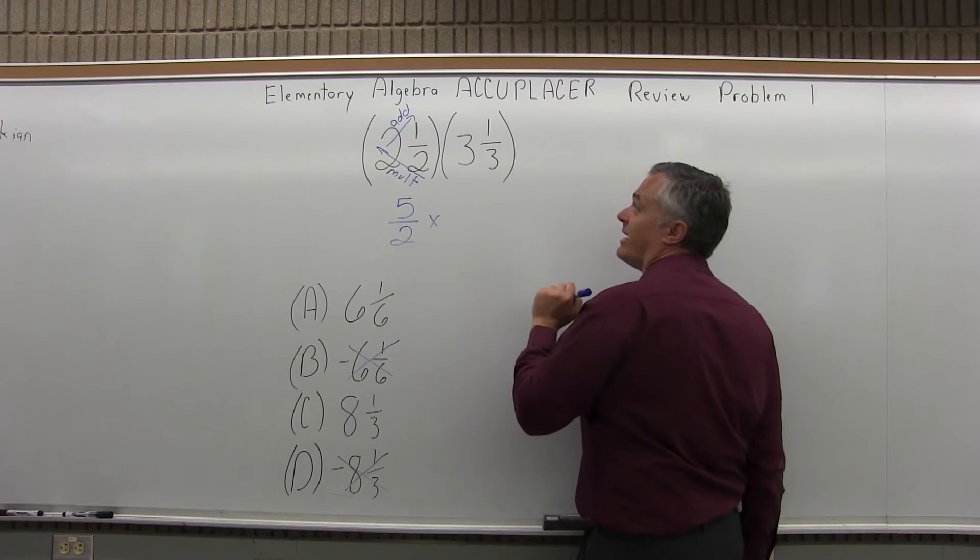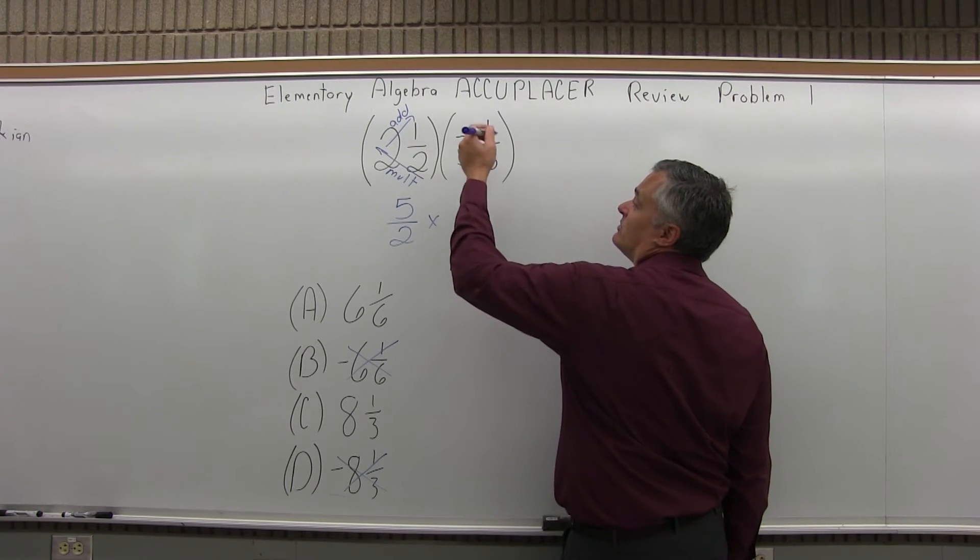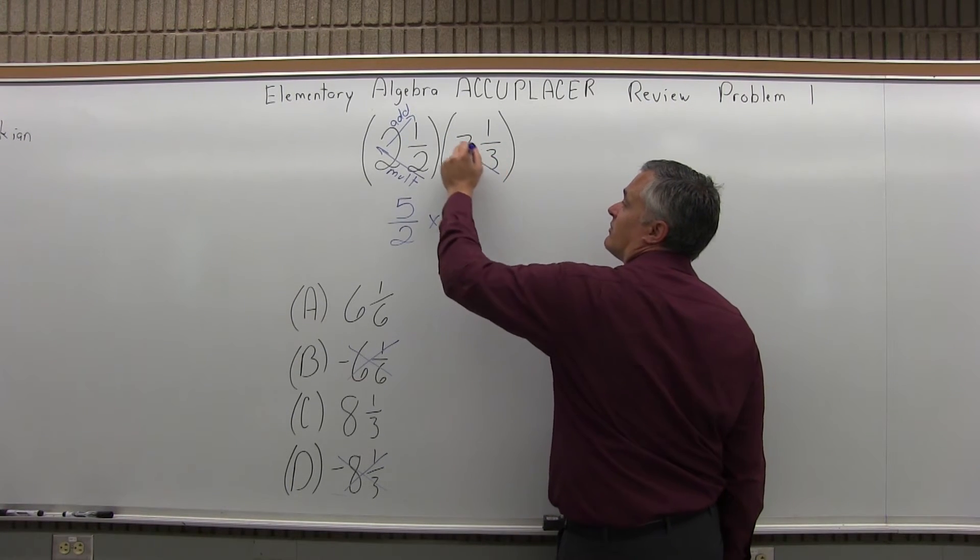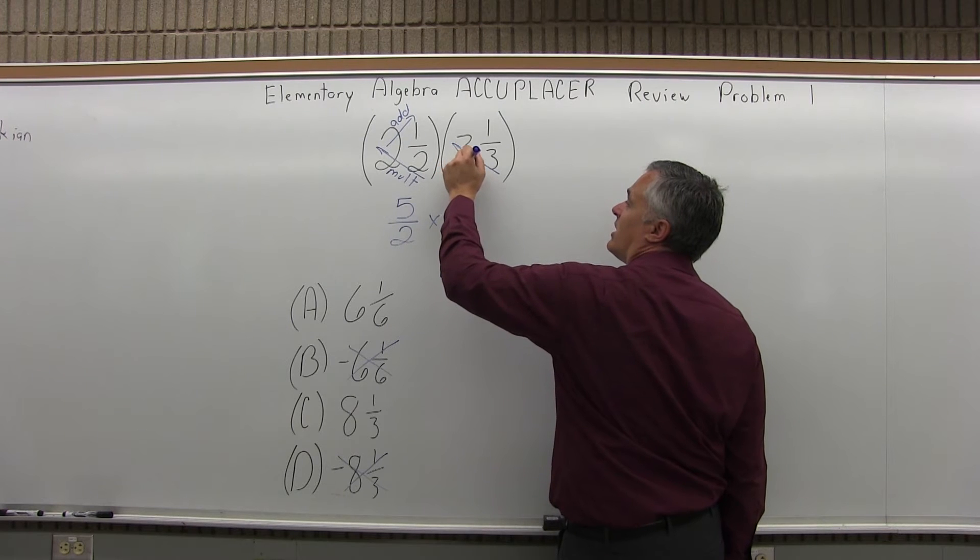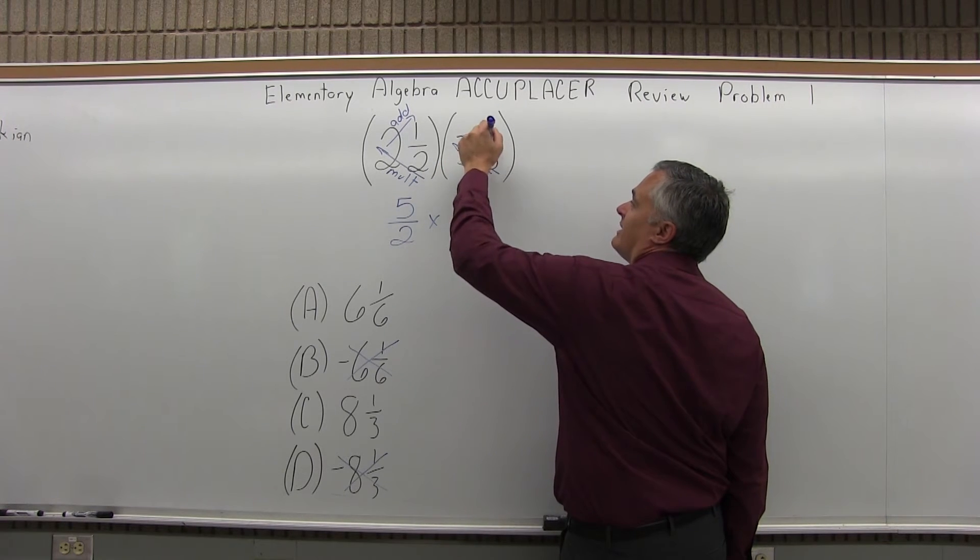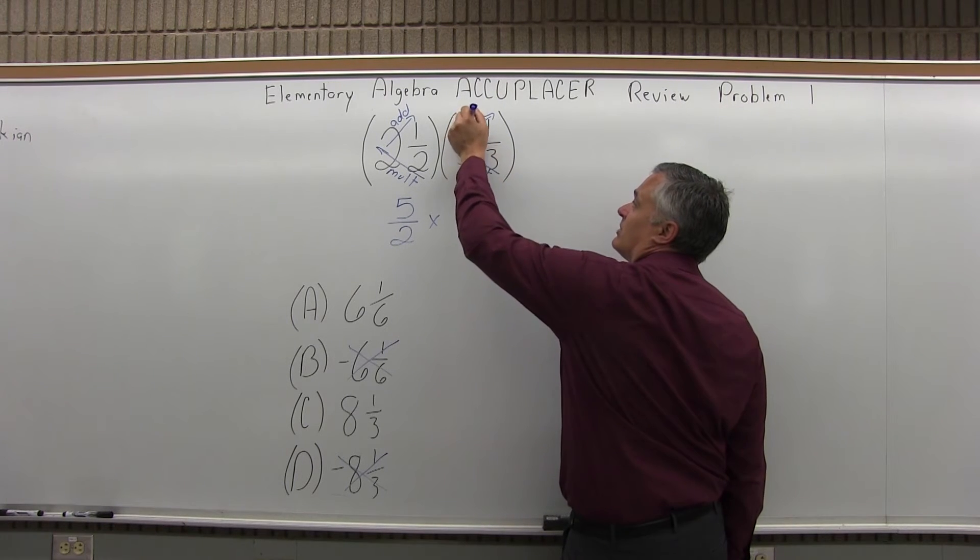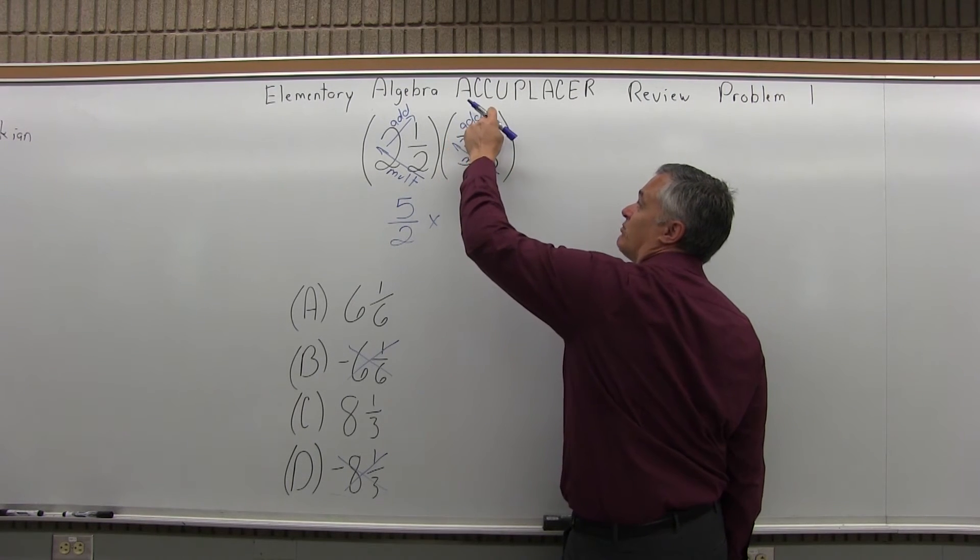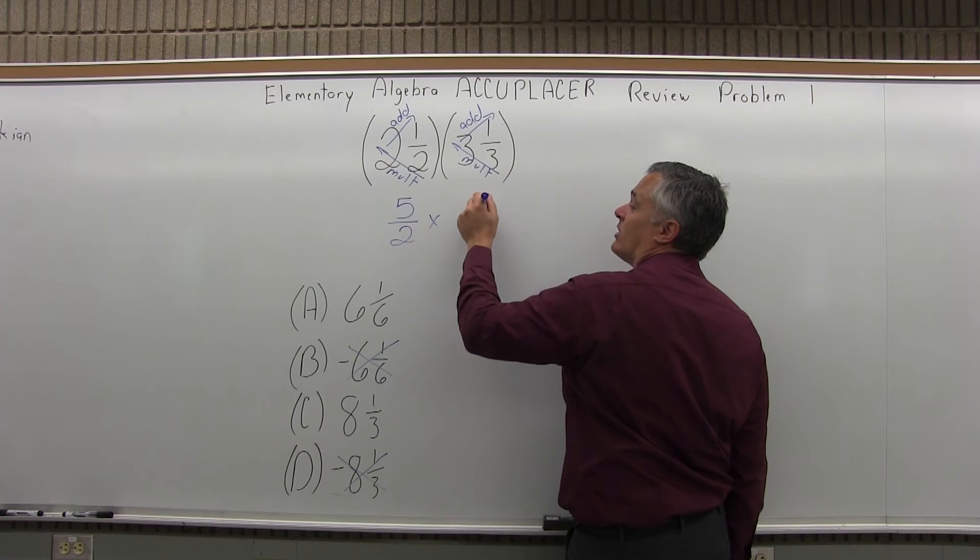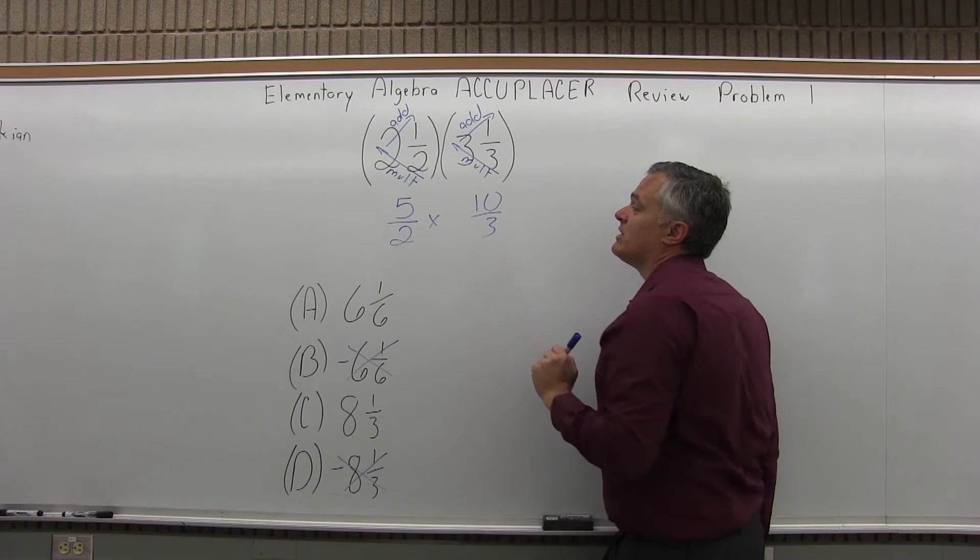And that's going to be multiplied times 3⅓. Same process: the denominator of 3 times the 3 that's in front, we will multiply, take the answer that we get, which is 9, and add coming up to the top. So the 9 that we got plus 1 more, 9 and 1 more is 10, keep the denominator, which is 3.